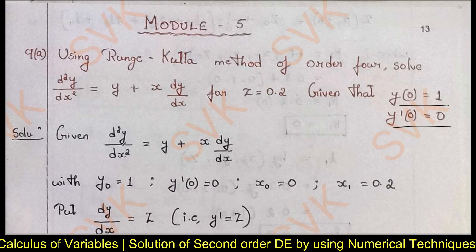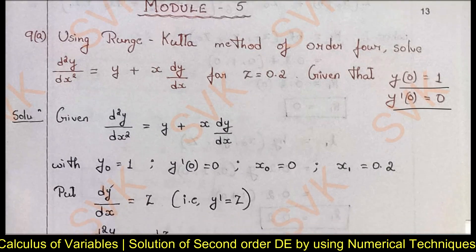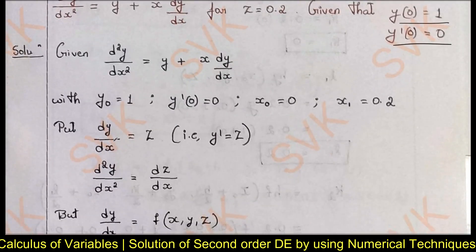Consider the given problem. It is a second order differential equation: d²y/dx² = y + x(dy/dx), with the given initial conditions. To proceed, go with the substitution: put dy/dx = z, so y' = z. Differentiating both sides with respect to x, we get d²y/dx² = dz/dx.